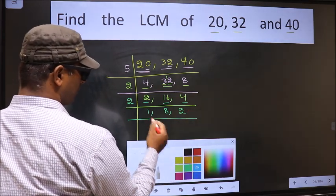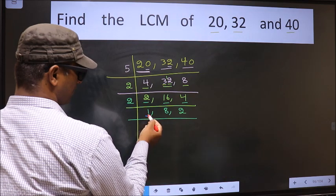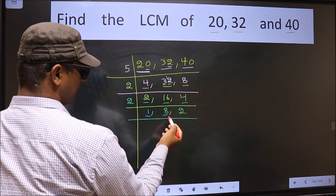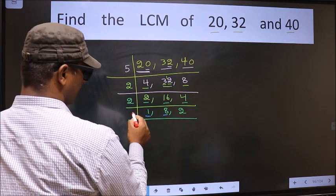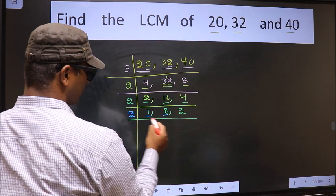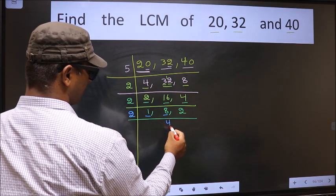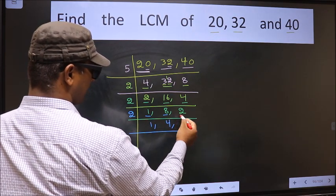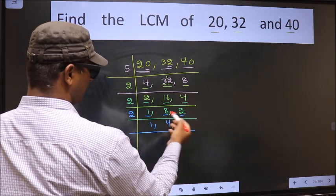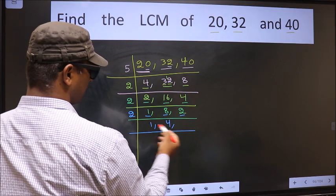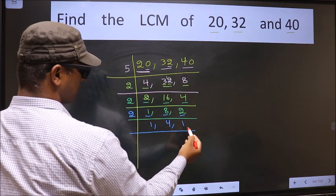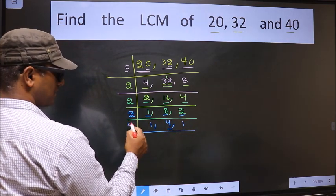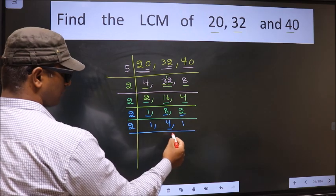We got 1 here. So focus on the other number, that is 8. 8 is 2 times 4. The other number 2 — when do we get 2 in the 2 table? 2 times 1 is 2. Now here we have 4, and 4 is 2 times 2.